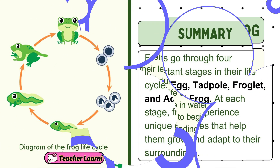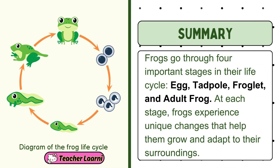To summarize, frogs go through four important stages in their life cycle: egg, tadpole, froglet, and adult frog. At each stage, frogs experience unique changes that help them grow and adapt to their surroundings.